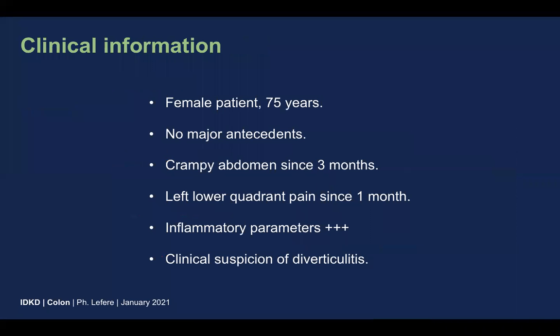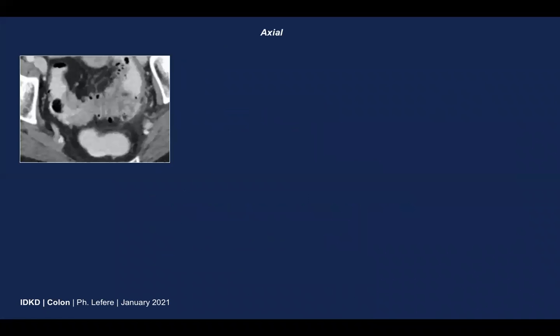Let's go to the story of the patient: a 75-year-old female patient without major antecedents, with abdominal cramps for three months, and now with more acute left lower quadrant pain since one month. She has clearly raised inflammatory parameters, and there is a clinical suspicion of diverticulitis.